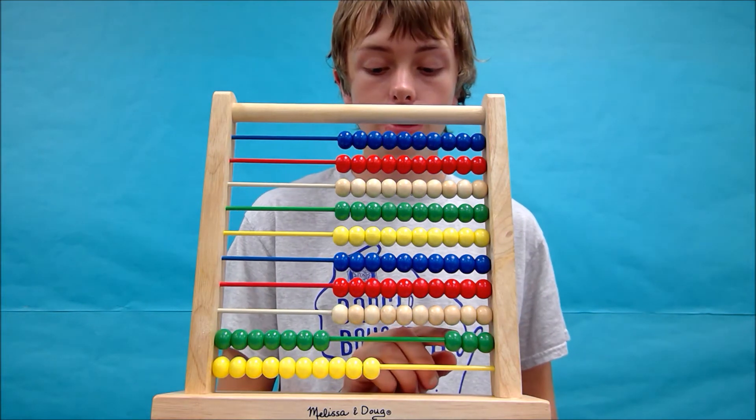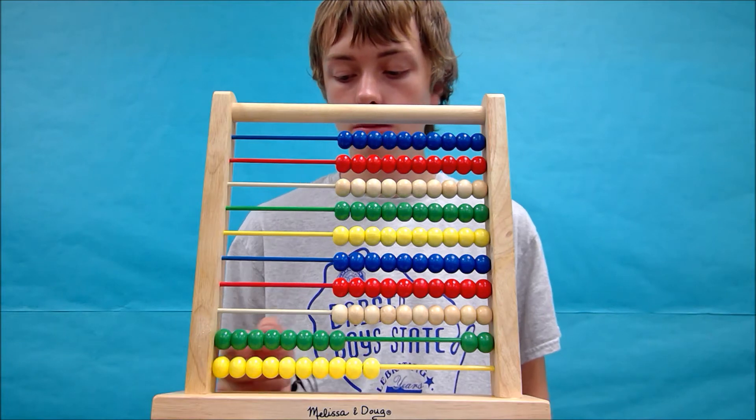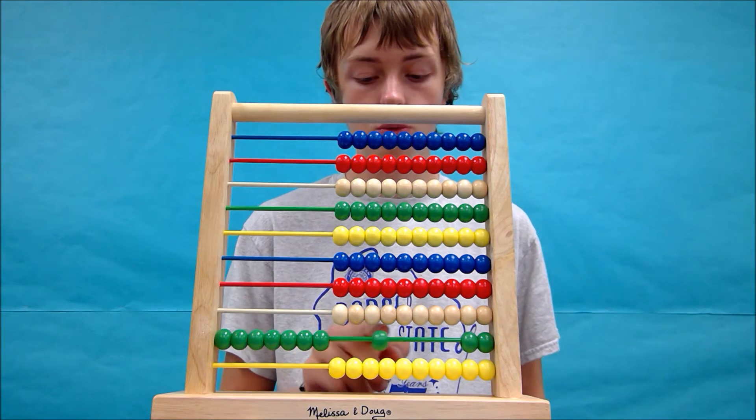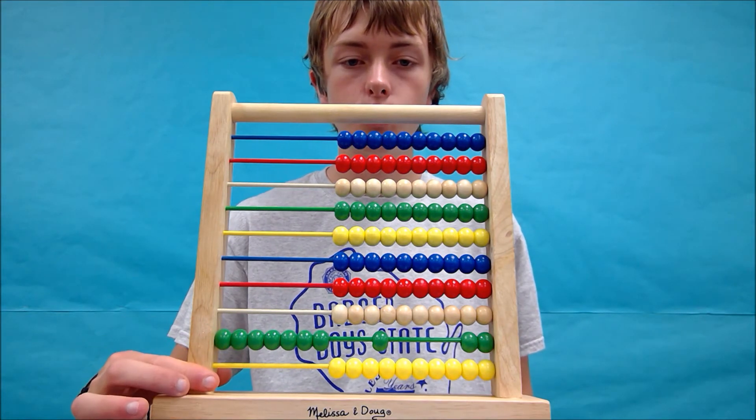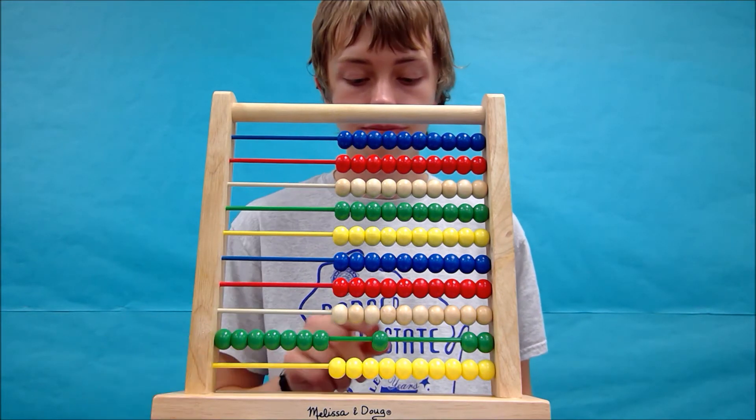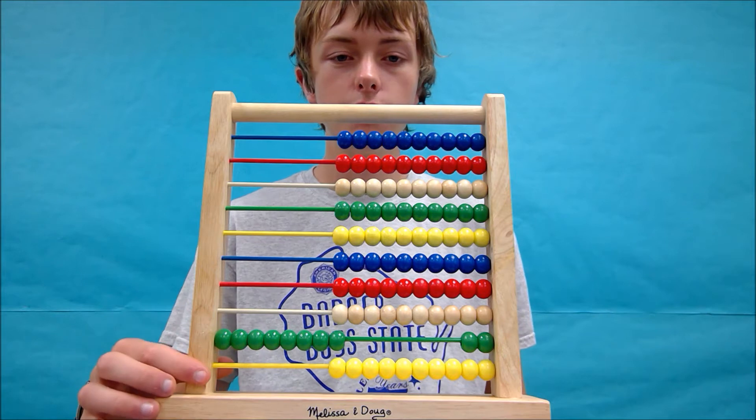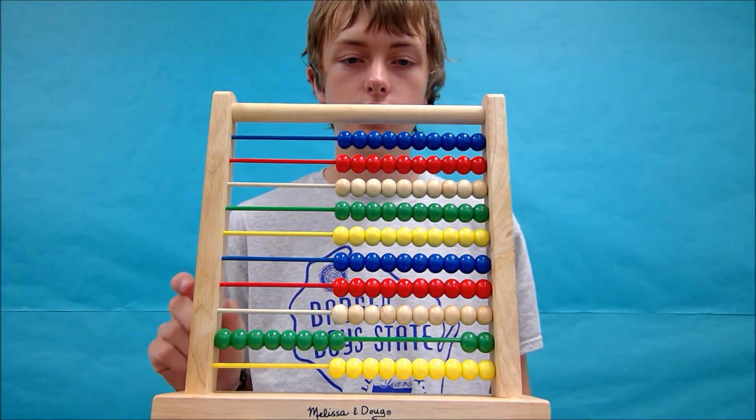Again, like we did in the last problem, we're going to move one 10 bead over and move the 10 ones back, because one green bead, one bead from the row above, equals 10 beads from the row below. So now we have the same thing, just it looks slightly different.